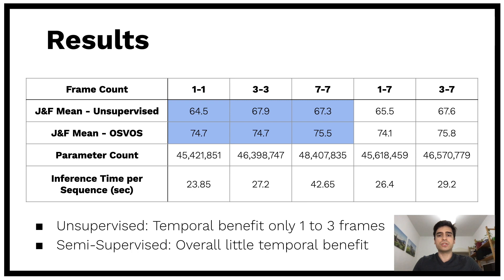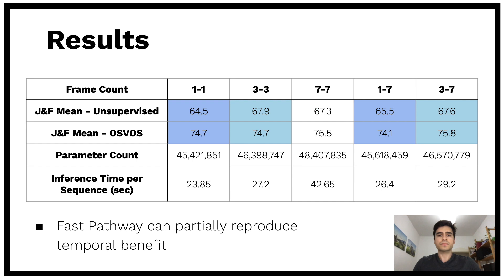In the case of OSVOS we generally see little temporal benefit, and only between three and seven frames. In general we can see the fast pathway can capture additional information — for example when we compare 1-1 and 1-7 in the unsupervised case, or 3-3 and 3-7 for OSVOS. If there was no improvement from temporal context, slow-fast also does not show any additional improvement — for example, as there is no improvement from 3-3 to 7-7, there is likewise no improvement from 3-3 to 3-7.